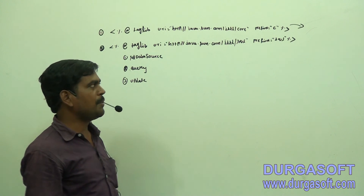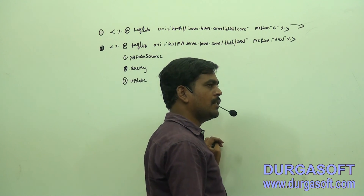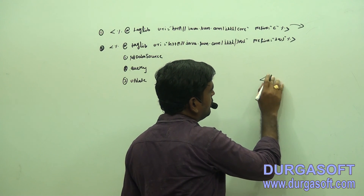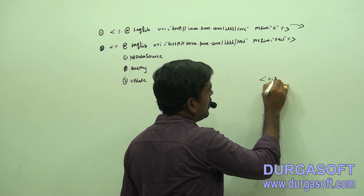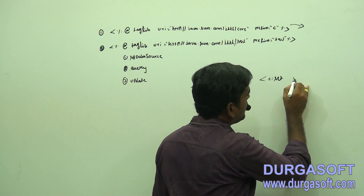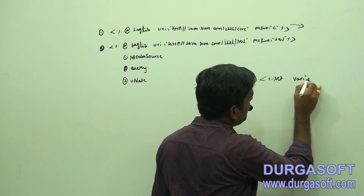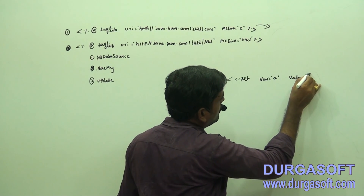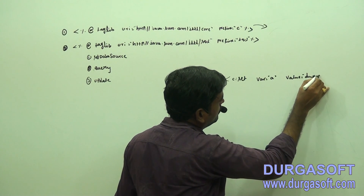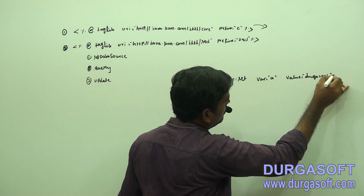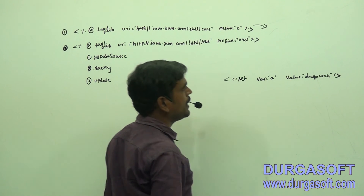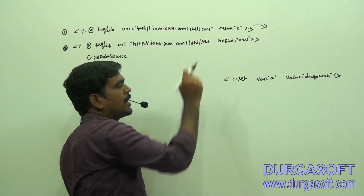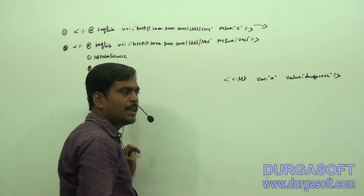So for example if we want to set a value we can use this syntax: c:set, var is equal to some variable, value is equal to DurgaTech. Then close. This is the way to set a value. c:set is given by this basic URI only.